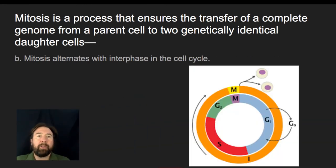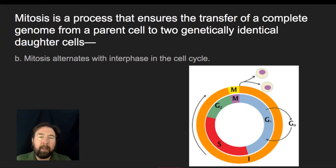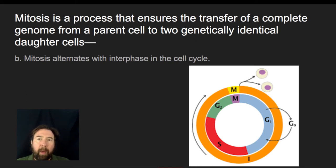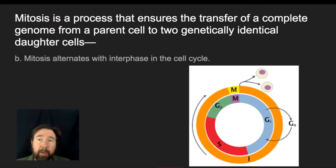Mitosis also alternates with interphase of the cell cycle. We don't normally see cells just divide and divide continuously. While mitosis is crucial for taking one cell and turning it into two identical daughter cells, unless you are in a phase like embryological development, cells are not going to be rapidly dividing. They're going to spend time between divisions, and we're going to have regulation to make sure that cells do not divide too rapidly.